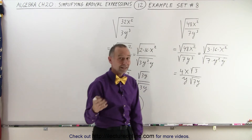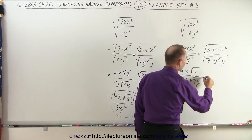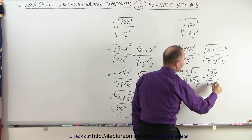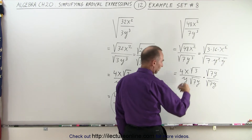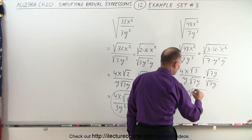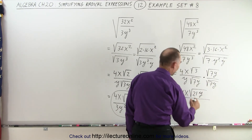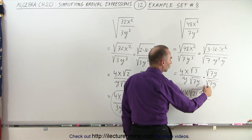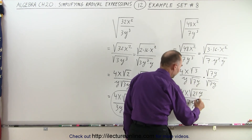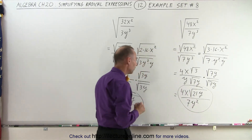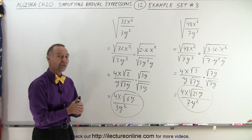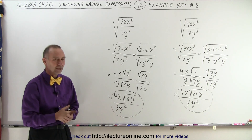Now again, we cannot leave it like that — we have to rationalize the denominator. So we have to multiply both the numerator and the denominator by the square root of 7y. In the numerator, we get 4x times the square root of 3 times 7, which is 21, times y. In the denominator, the square root of 7y times the square root of 7y is simply 7y, and multiplying by y gives us y squared. And there's the final form of that particular expression. That's how we use the methodologies to solve something a little bit more complex. That's how it's done.